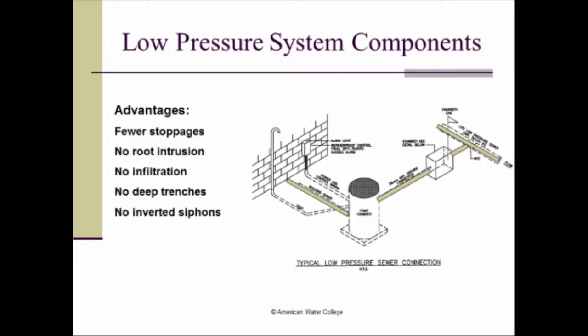And there's some advantages to the low pressure system and these include fewer stoppages, you don't have root intrusion problems like you do in gravity systems, you don't have the infiltration problems, the trenches don't need to be as deep, and you don't have a need for inverted siphons. We already talked about that in the definitions, and a little bit later we'll talk about the inverted siphon again. But these are the advantages that we see with the low pressure system.